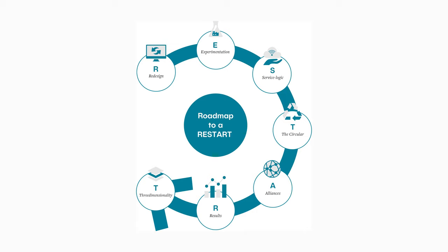In this video we're going to introduce a framework for how you can go about to design sustainable business models in practice. We call this framework RESTART and it's an acronym of seven paths towards more sustainable business models. The seven paths that we will discuss in this video are characteristics of business models that are already taking place, but we believe they will be even more important in the future.